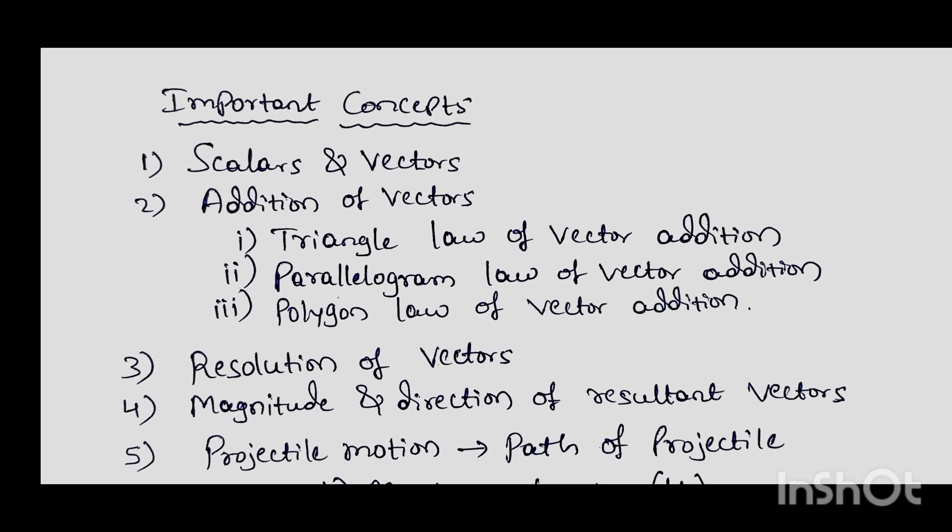Next is the magnitude and direction of resultant vectors. This is an important derivation carrying five marks. The resultant vector has a certain magnitude and makes a certain angle to the horizontal axis — that angle is the direction of the resultant vector. From this topic you will get a five-mark question.